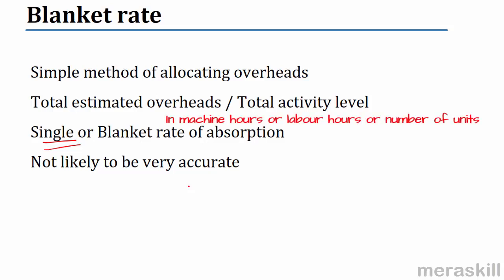The activity level may be machine hours, labor hours, number of units — whichever method you take. The idea is that you take the total overheads and divide it by the total activity level.